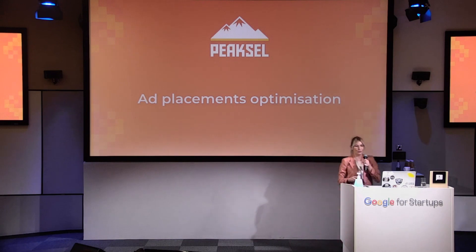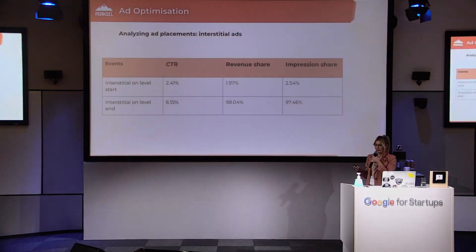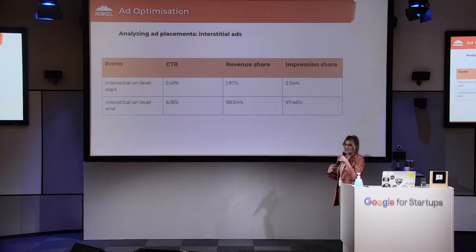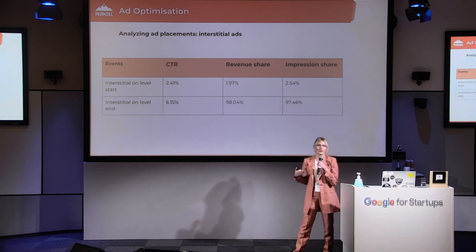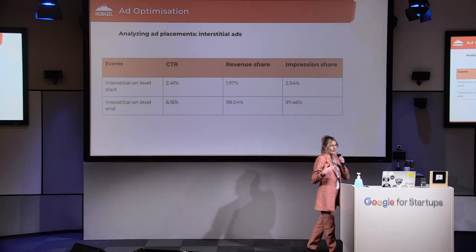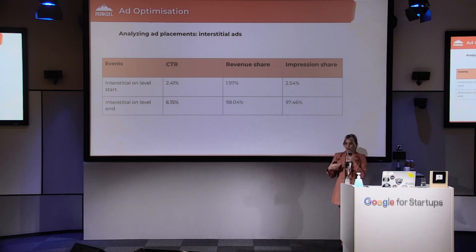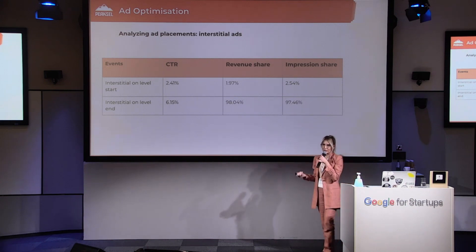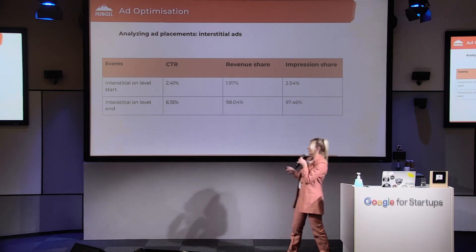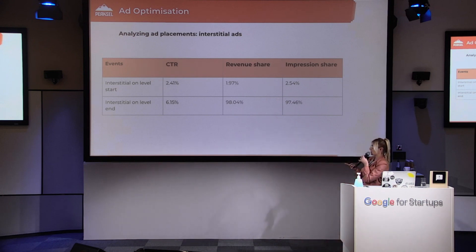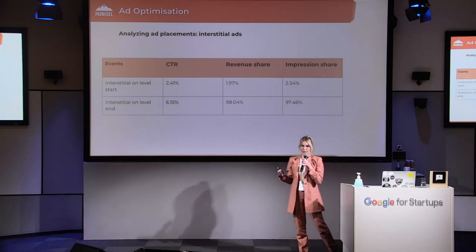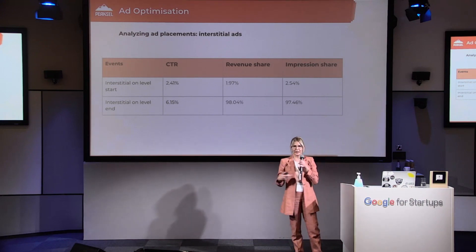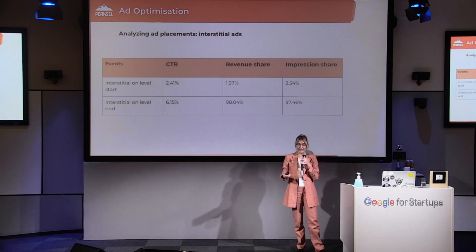Now that we decided on ad formats, I will show you how we optimize different ad placements. This is an example for interstitial ad placement. We have some standard settings: interstitial on level start and interstitial on level end. Along with eCPM, you should measure metrics like CTR, revenue share, and impression share. As you can see here, the greatest revenue share is with interstitial on level end, so we decided to keep that placement. For interstitial on level start, we decided to disable it because it had poor metrics and negatively affected user engagement and experience.